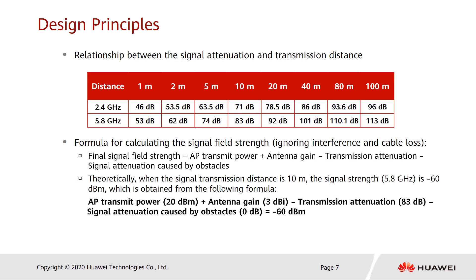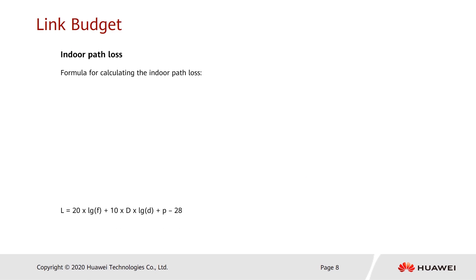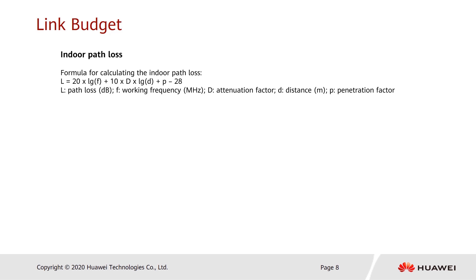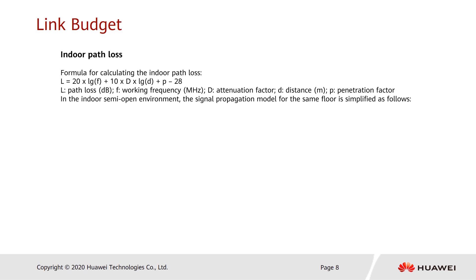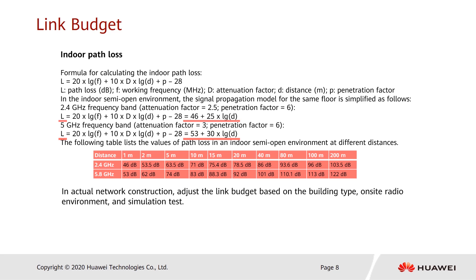The relationship between transmission distance and attenuation is established using an indoor path loss formula. In the formula, L indicates path loss; F indicates working frequency in MHz — 2400 for 2.4 GHz and 5800 for 5.8 GHz; uppercase D is the attenuation factor; lowercase p is the penetration factor; and lowercase d is the distance. In an indoor semi-open environment, D and p are fixed, making d the only variable. Substituting values such as 1 m, 2 m, 10 m, and 40 m gives the attenuation values for 2.4 GHz and 5.8 GHz signals.